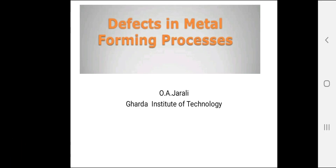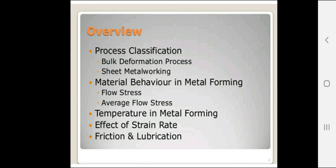Namaskar. Today we will discuss defects in metal forming, also called defects in sheet metal operations. Metal forming is classified as a bulk deformation process and sheet metal working. We'll also discuss material behavior in metal forming — flow stresses, average flow stresses, temperature in metal forming, effect of strain rate, and friction and lubrication. These are some factors related to formation of defects in sheet metal operations.